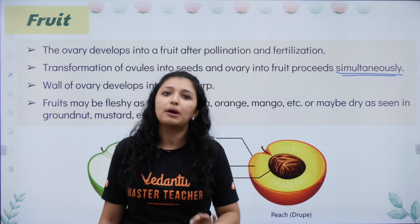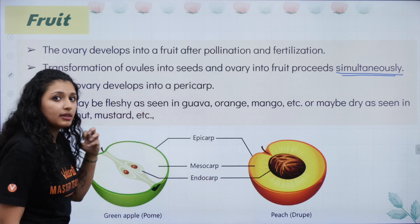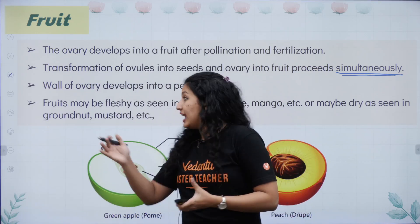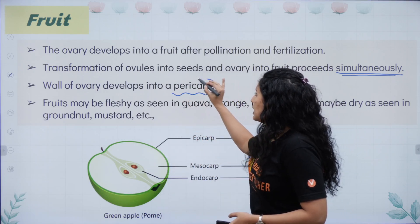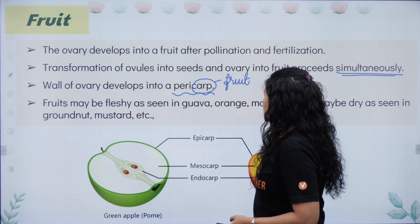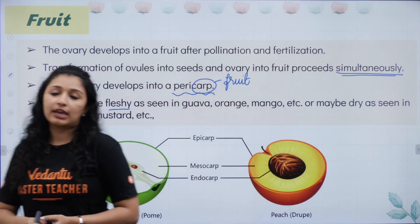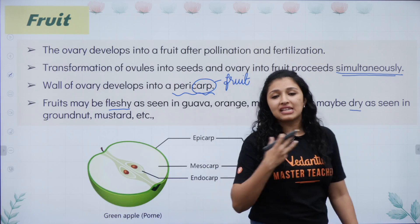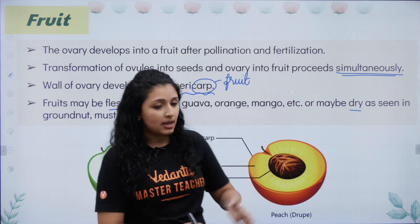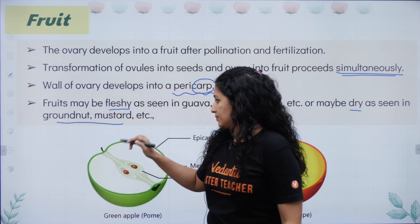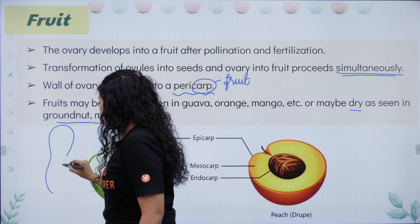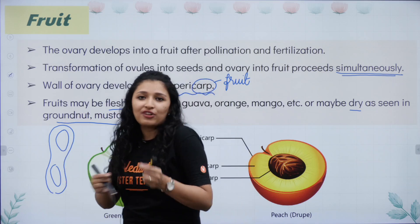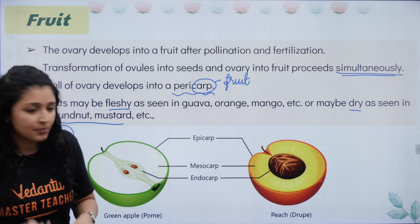The wall of the ovary develops to form something called the pericarp — 'carp' relates to fruit. Fruits can be fleshy, like mango and grapes, or dry, as seen in groundnut and mustard. In groundnut, the shell around it is the fruit — the pericarp — and inside the shell is the seed that we eat. In fleshy fruits, the pericarp is differentiated into three layers: epicarp, mesocarp, and endocarp.